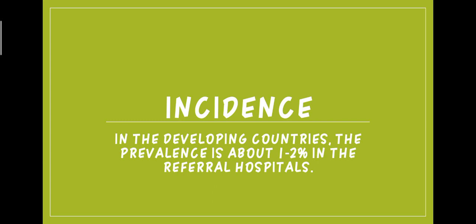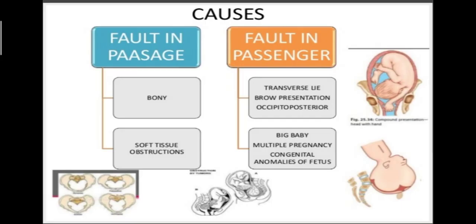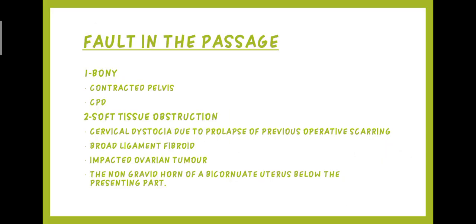The prevalence is about 1-2% in referral hospitals. Coming to the causes of obstructed labour, it may be due to fault in passage or fault in passenger. Fault in passage means fault in the mother's pelvis, which includes bony or soft tissue obstruction. In bony obstruction, it may be due to a contracted pelvis or cephalopelvic disproportion. Soft tissue obstruction includes cervical dystocia due to prolapse or previous operative scar, and broad ligament fibroid.